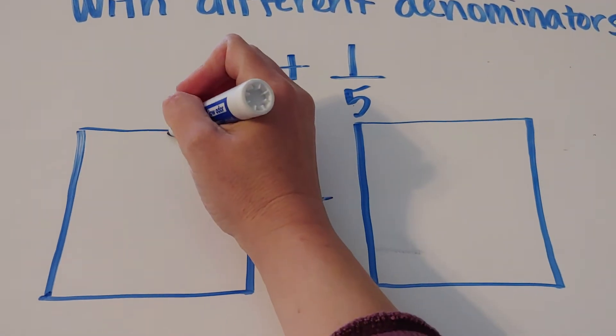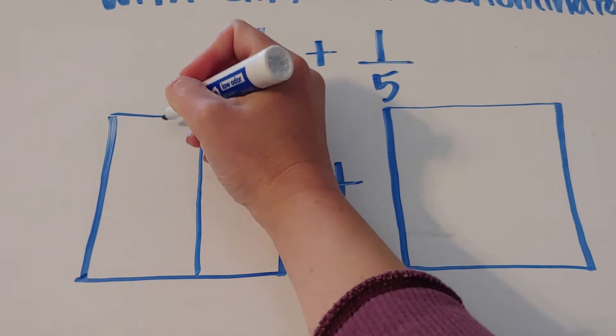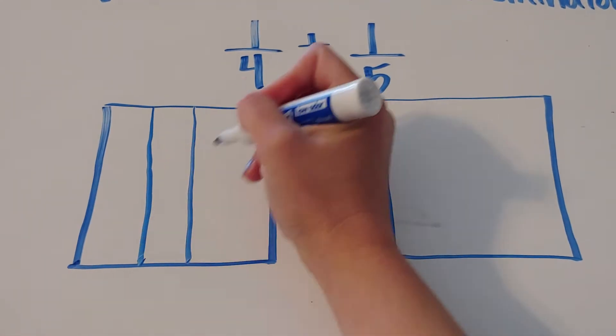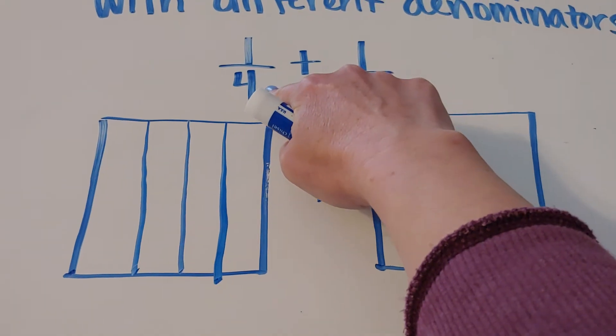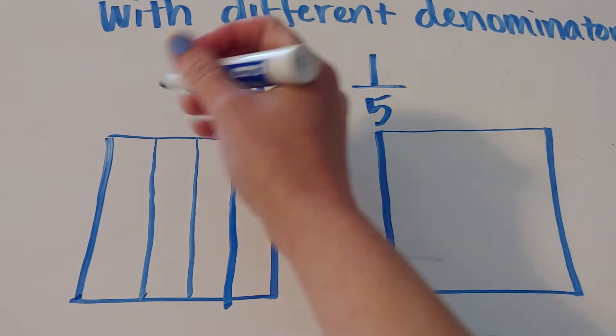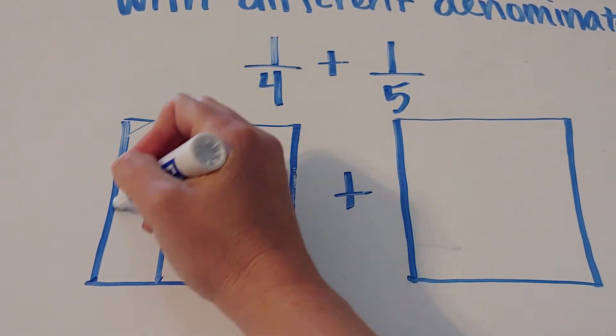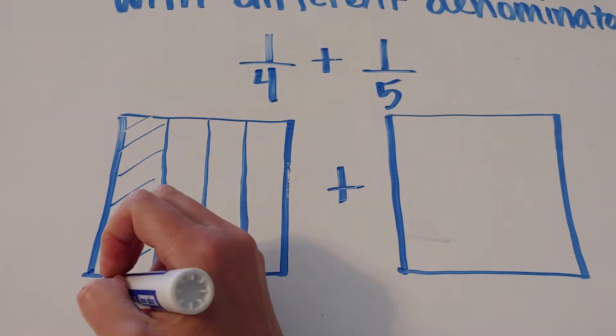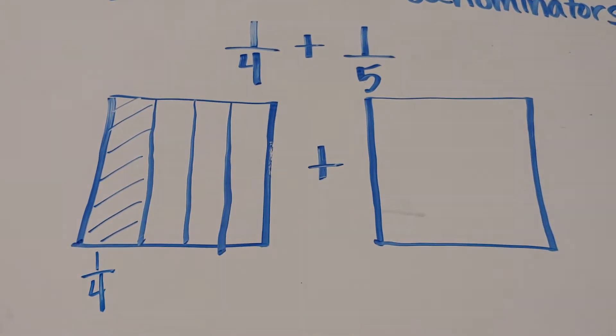So we're going to take this one and we're going to cut it into four skinny vertical strips. Four because the denominator is four, and because it's one we're going to shade one out of the four. So this is representing one-fourth.